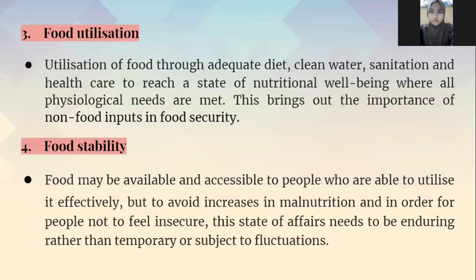The fourth and last element is food stability. Food may be available and accessible to people who are able to utilize it effectively, but to avoid increases in malnutrition and for people not to feel insecure, this state of affairs needs to be enduring rather than temporary or subject to fluctuations.